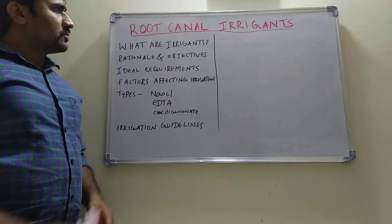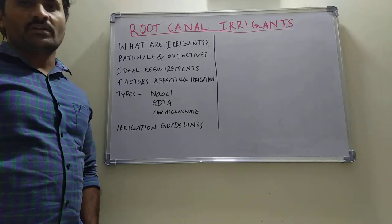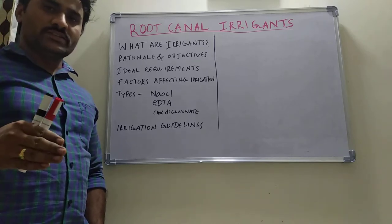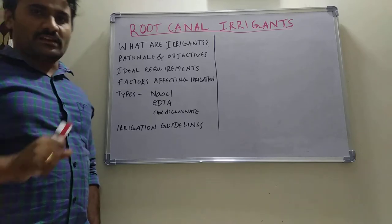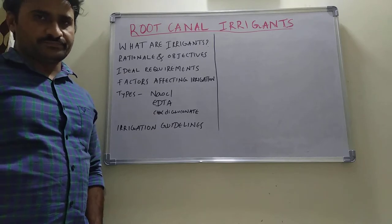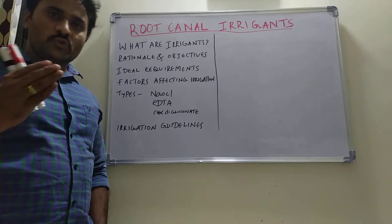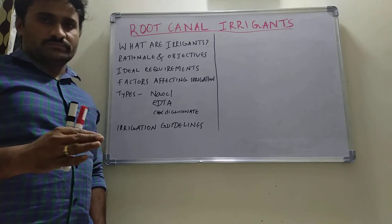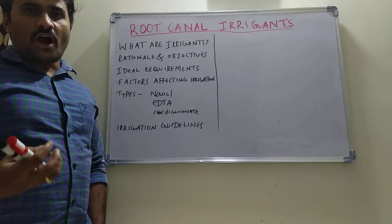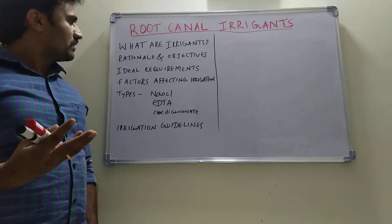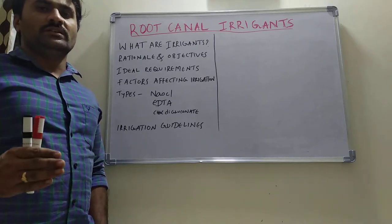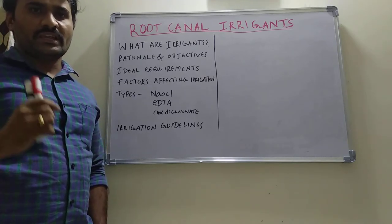We'll discuss root canal irrigants. Root canal irrigants are the solutions used to irrigate the canal while doing the root canal cleaning and shaping procedure. These are the solutions used to flush out debris and bacterial products, as well as dentinal chips, out of the canal.